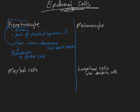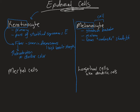The next epidermal cell type is the melanocyte, found only in the stratum basale. The root 'melano' tells you it makes melanin — so a melanocyte is a melanin-producing cell, just as a keratinocyte is a keratin-producing cell. Melanin forms an umbrella shielding the nucleus and DNA from UV radiation to prevent DNA destruction.